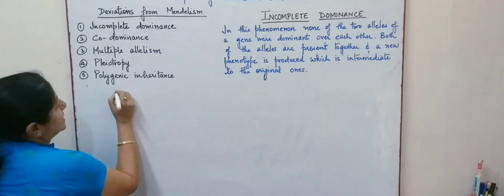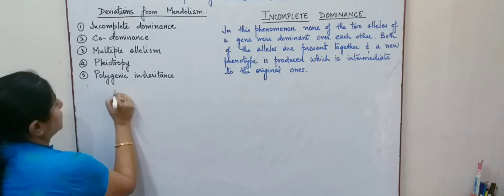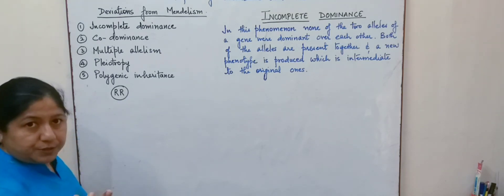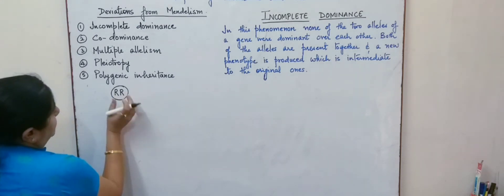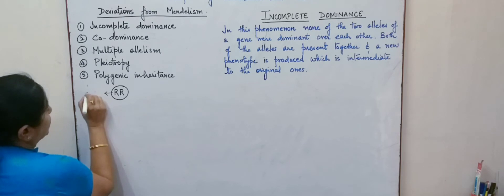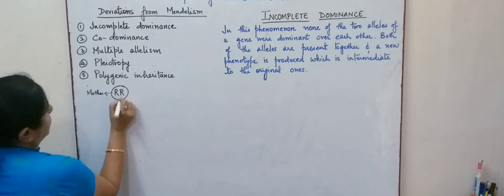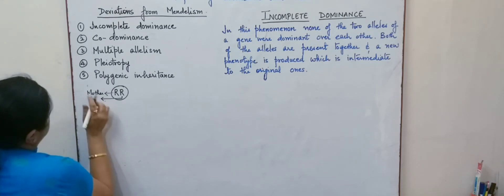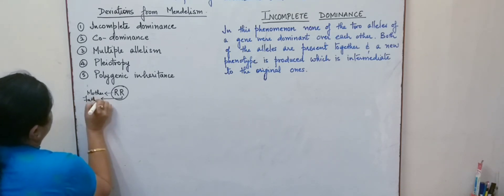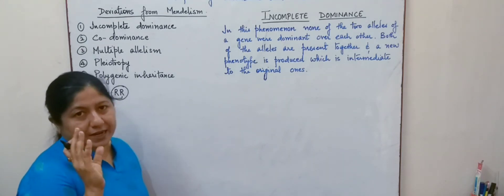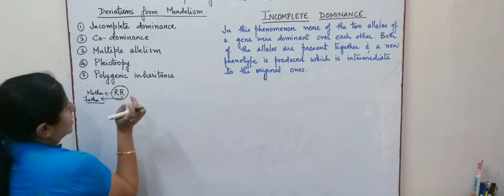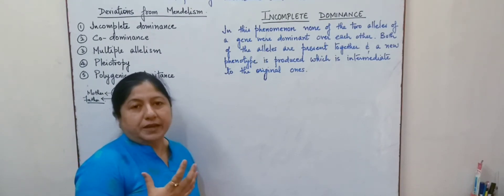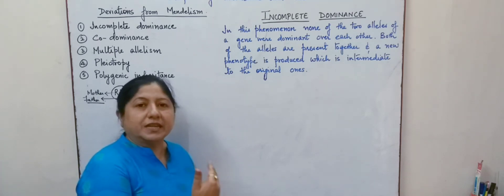We know that each character, trait, or phenotype is governed by a pair of alleles. This allelic pair is responsible for a certain trait. Out of this allelic pair, one gene is contributed by the mother or maternal side and one is contributed by the father. Both parents contribute to the formation of an allelic pair, and this allelic pair controls or regulates a particular trait due to the production of certain enzymes which enable the synthesis of a protein.